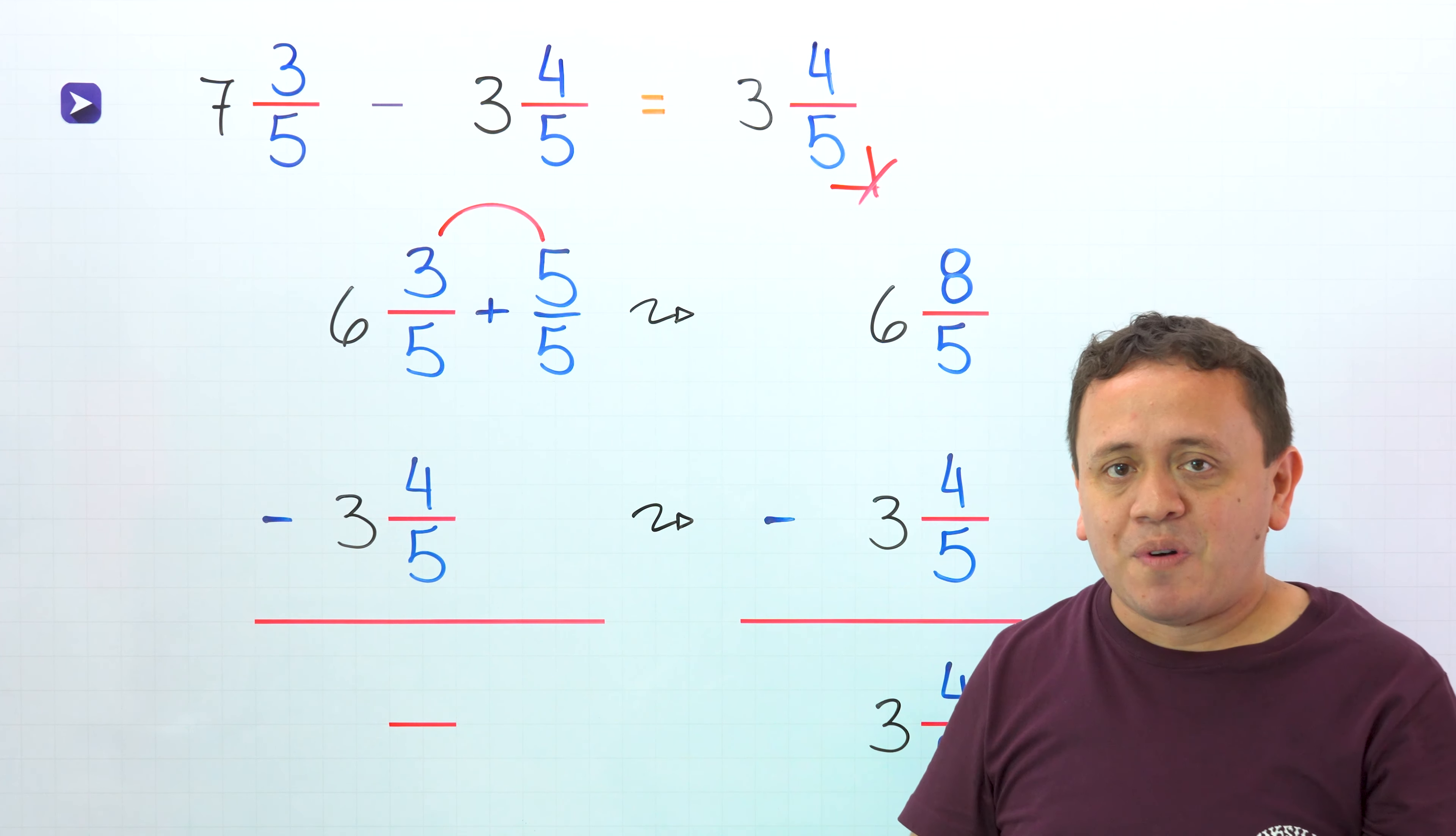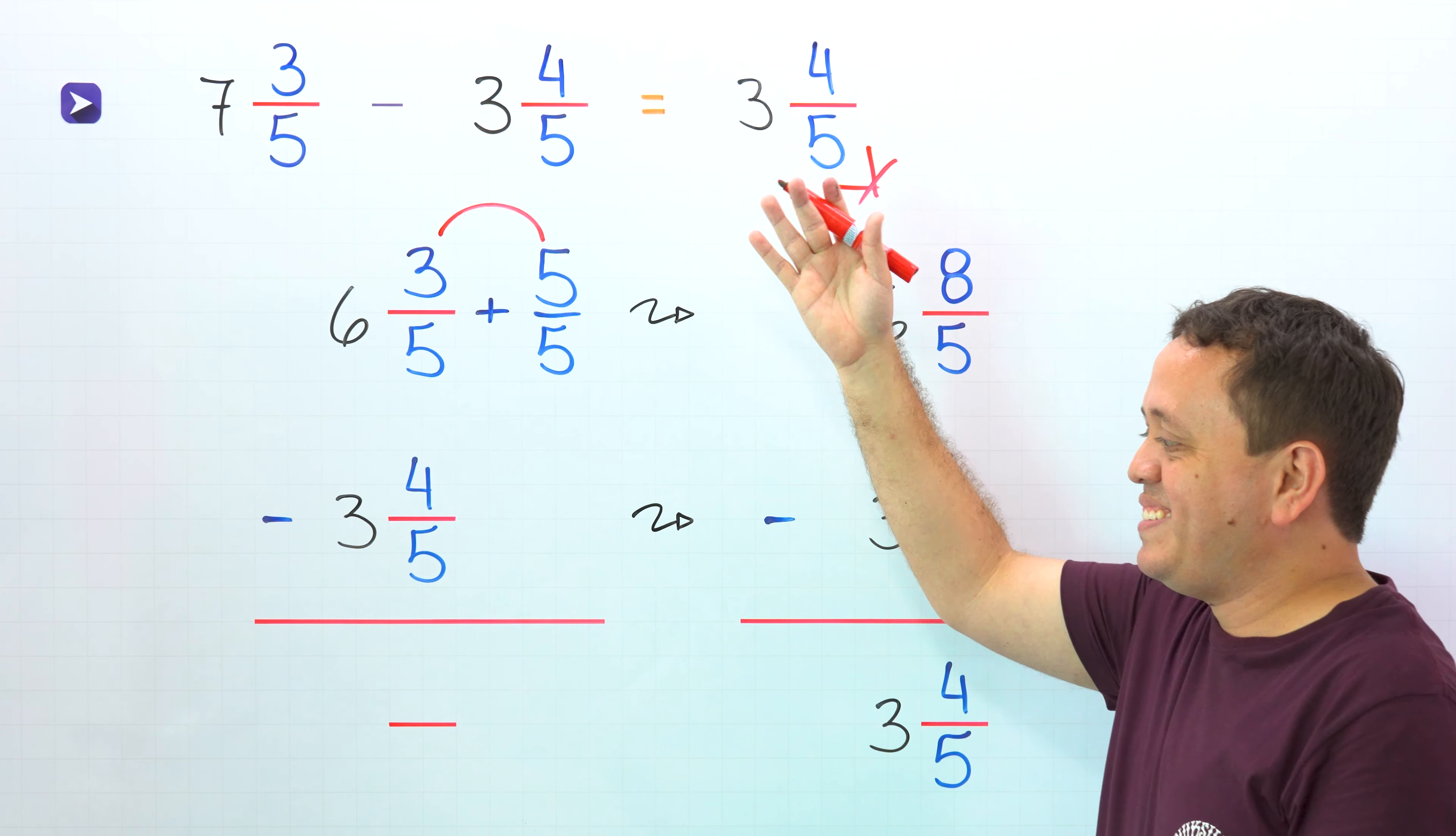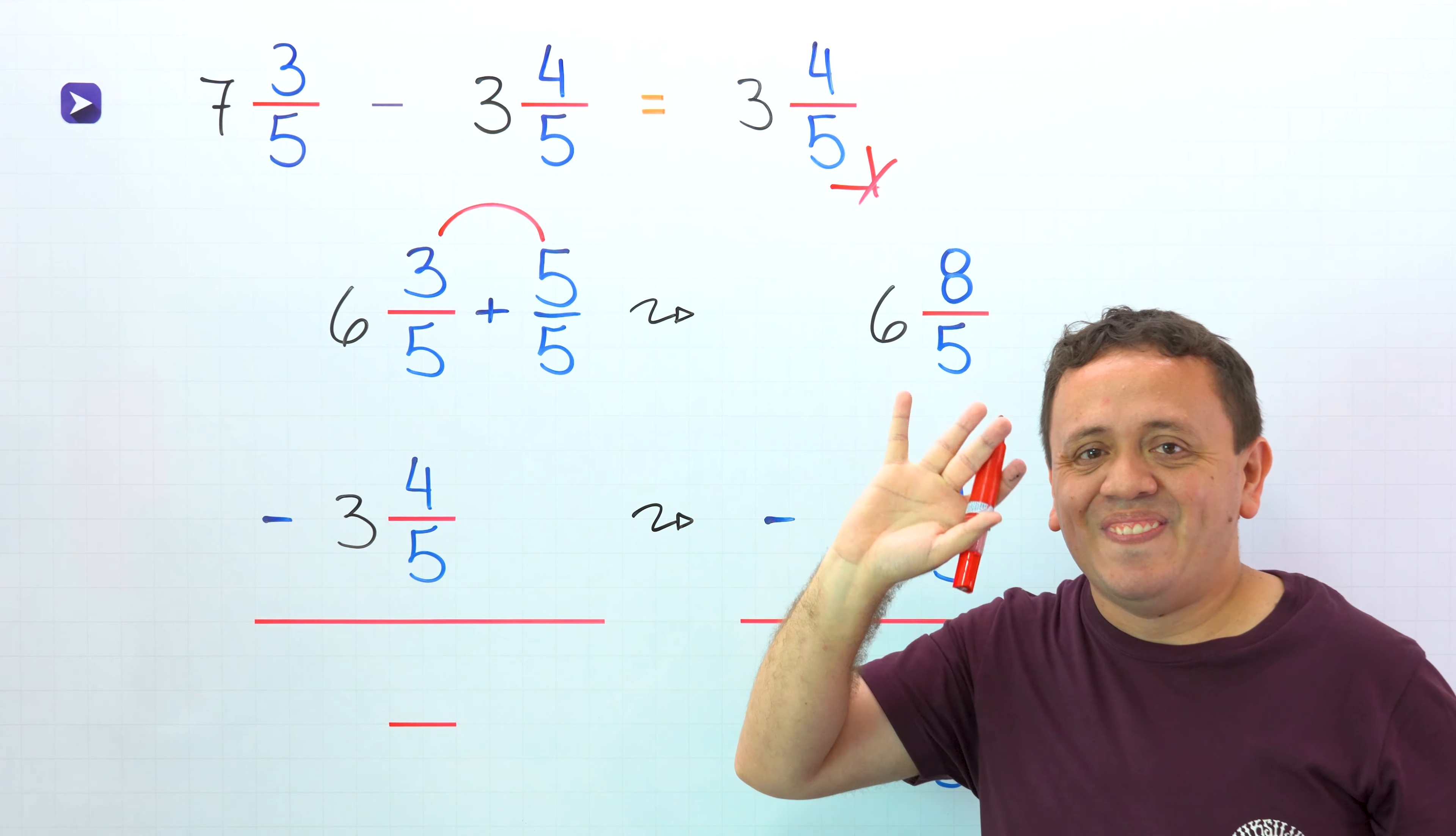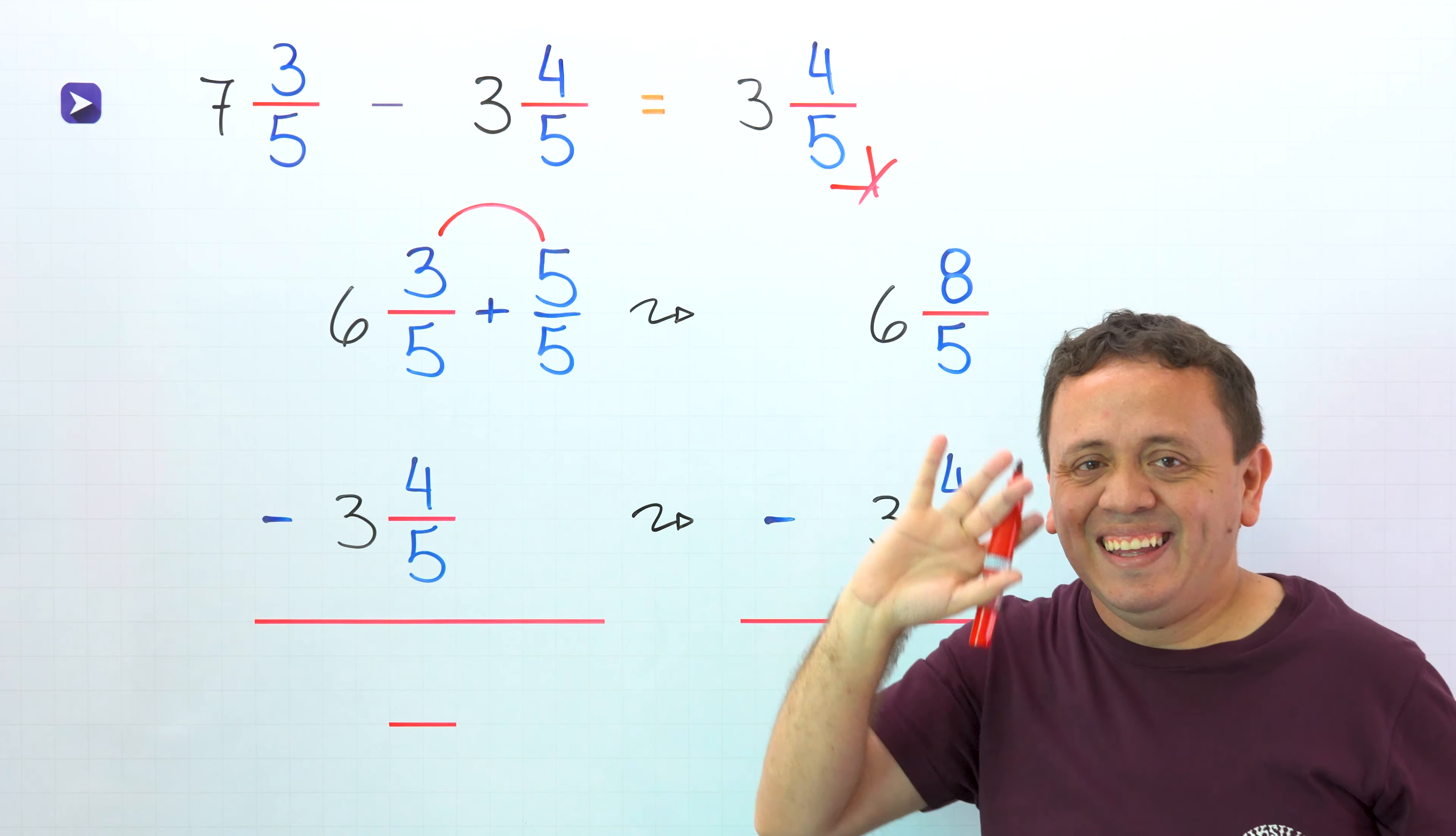In this example, we need to subtract 7 and 3 fifths minus 3 and 4 fifths. As you can see, these two mixed numbers have the same denominator. To find the difference, we're going to work vertically.